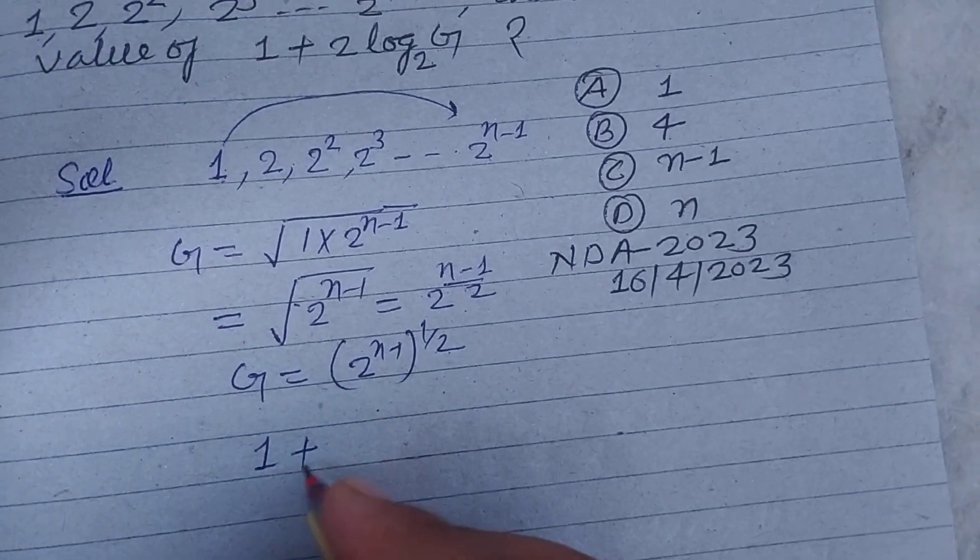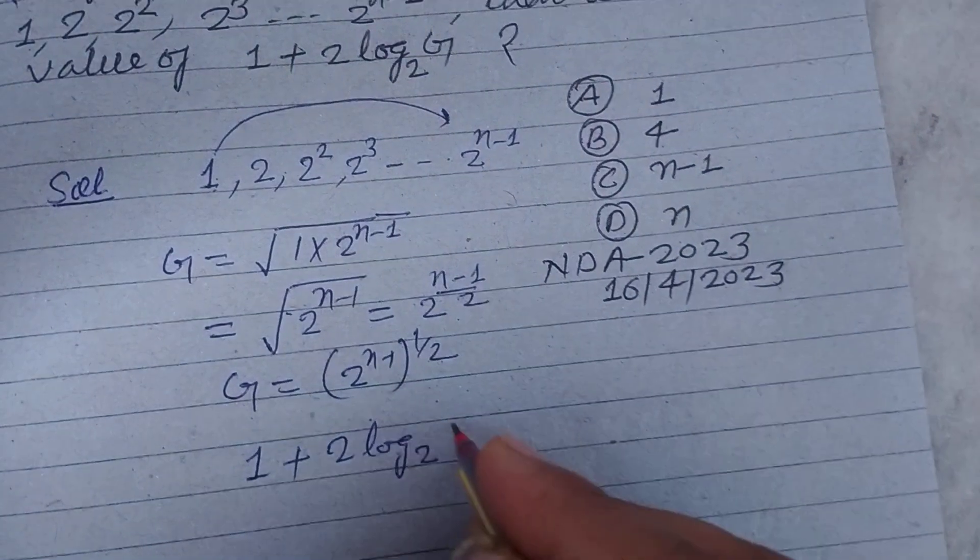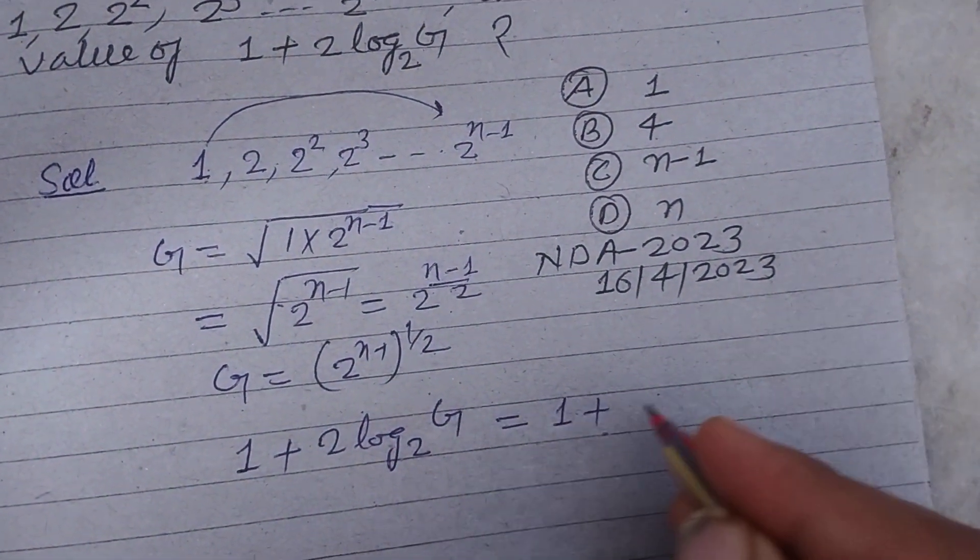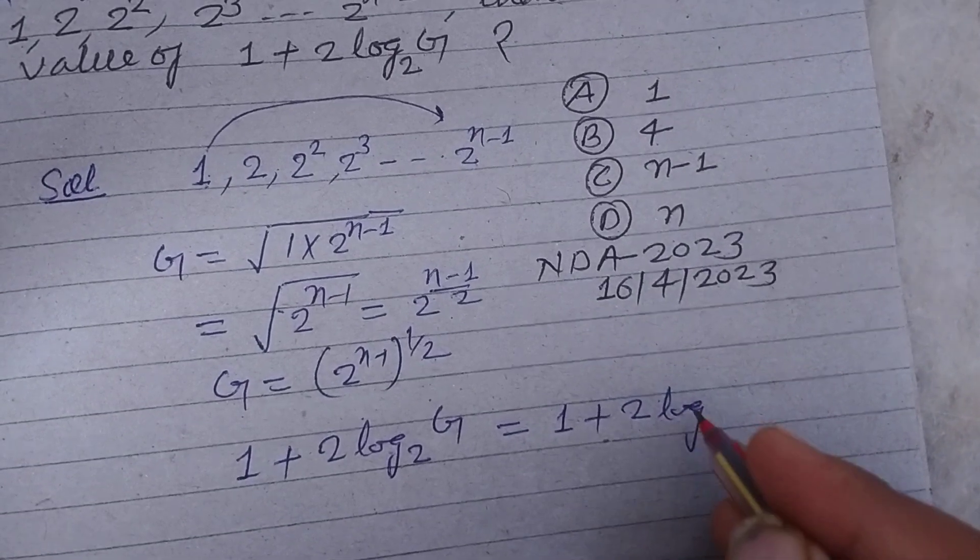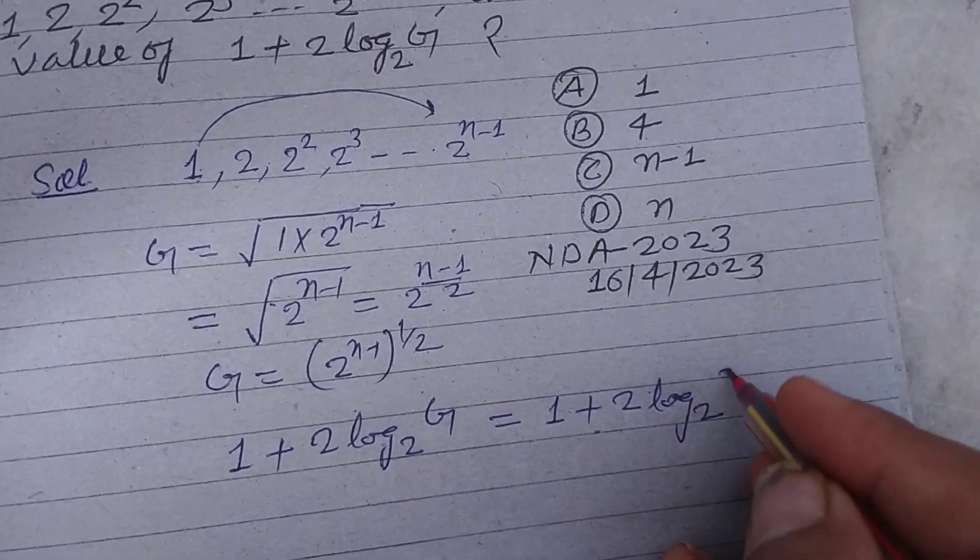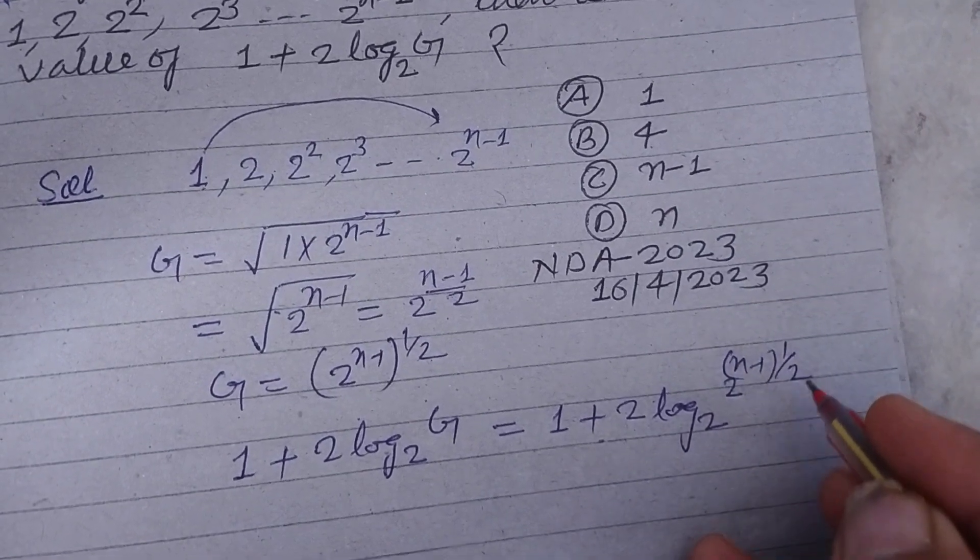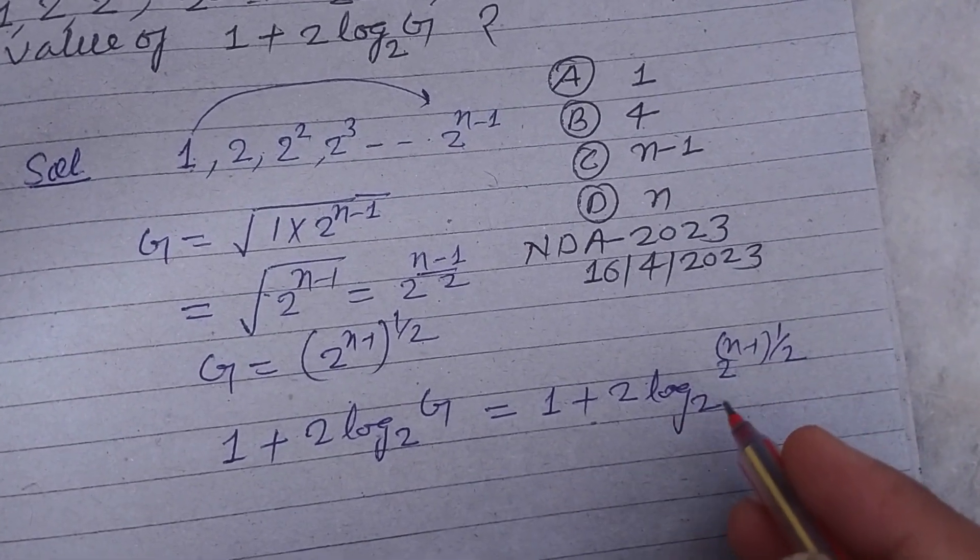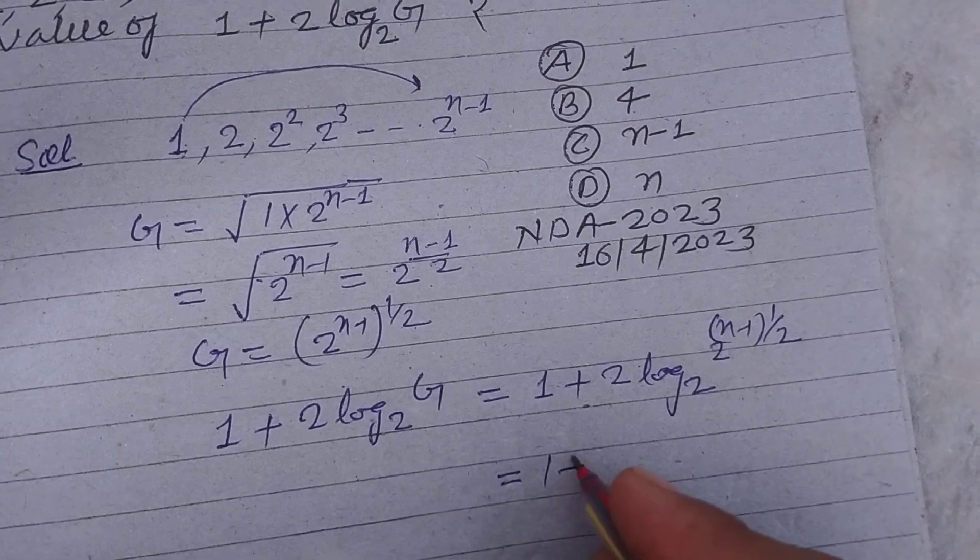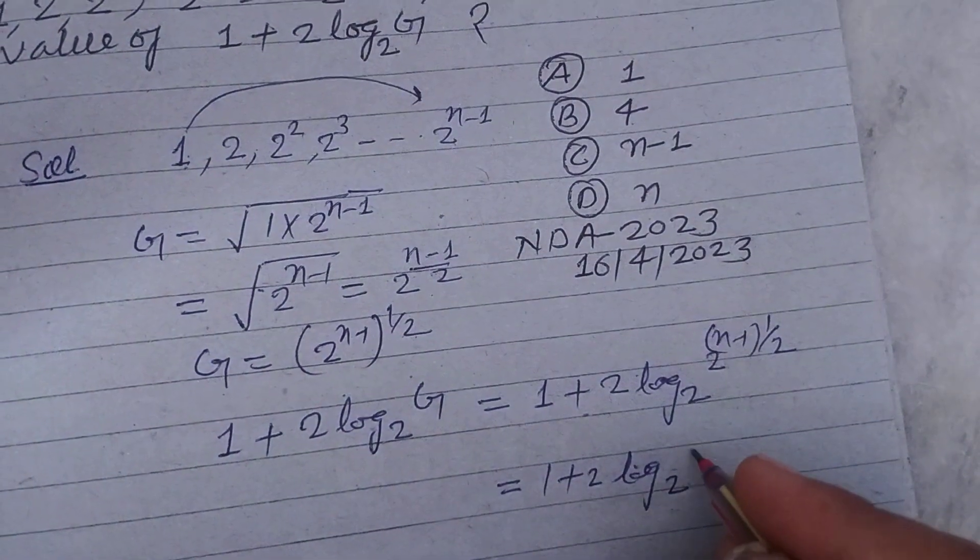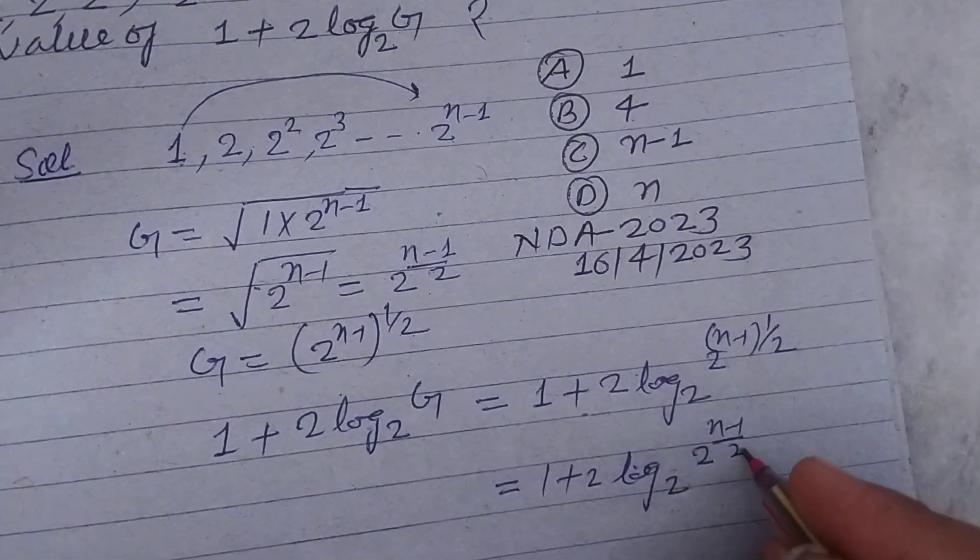Now, question asking the value of 1 plus 2 log 2 base G. So 1 plus 2 log G is 2 to the power n minus 1 by 2.